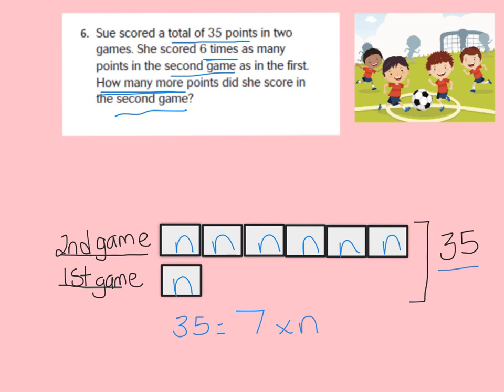Now we need to figure out what that missing number is. 7 times what gives me 35? That's right — 7 times 5. So N equals 5. Let's go ahead and replace all of our Ns with the number 5.